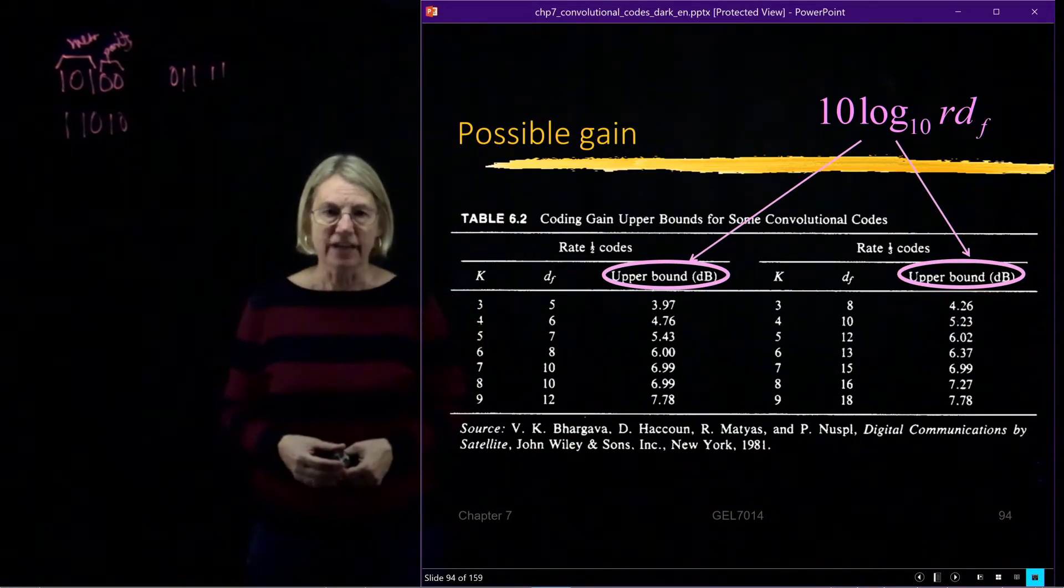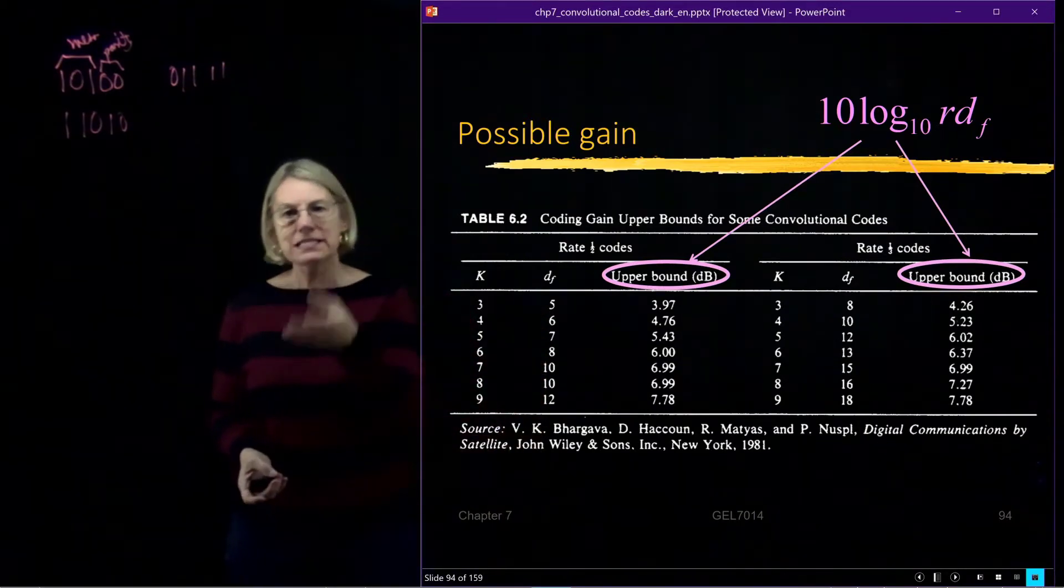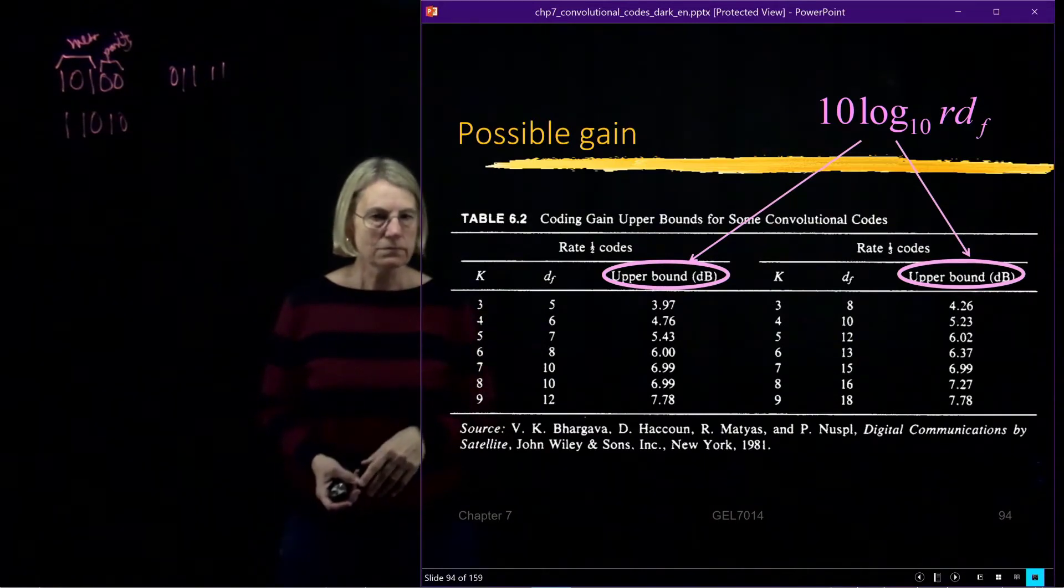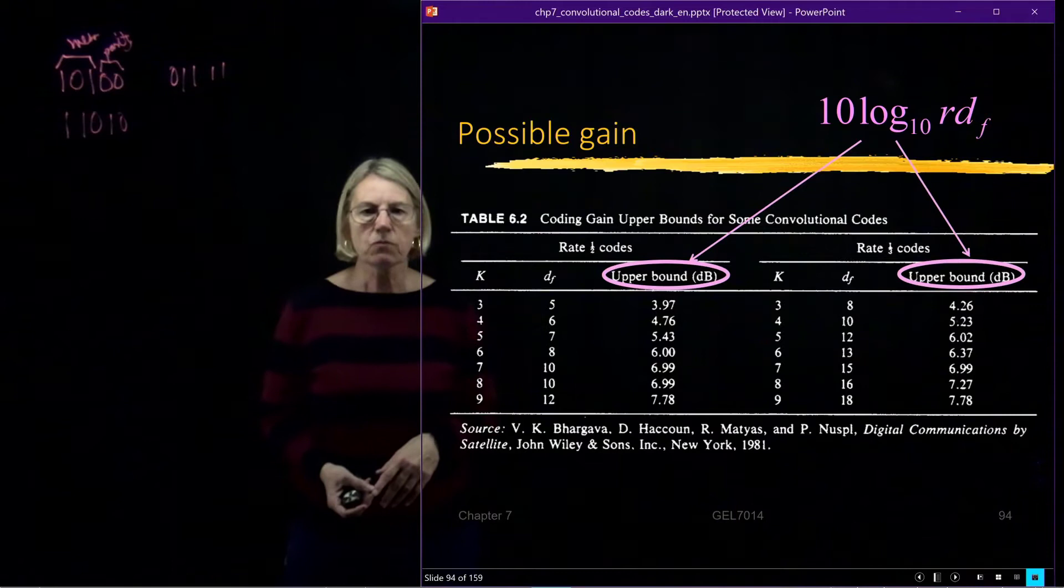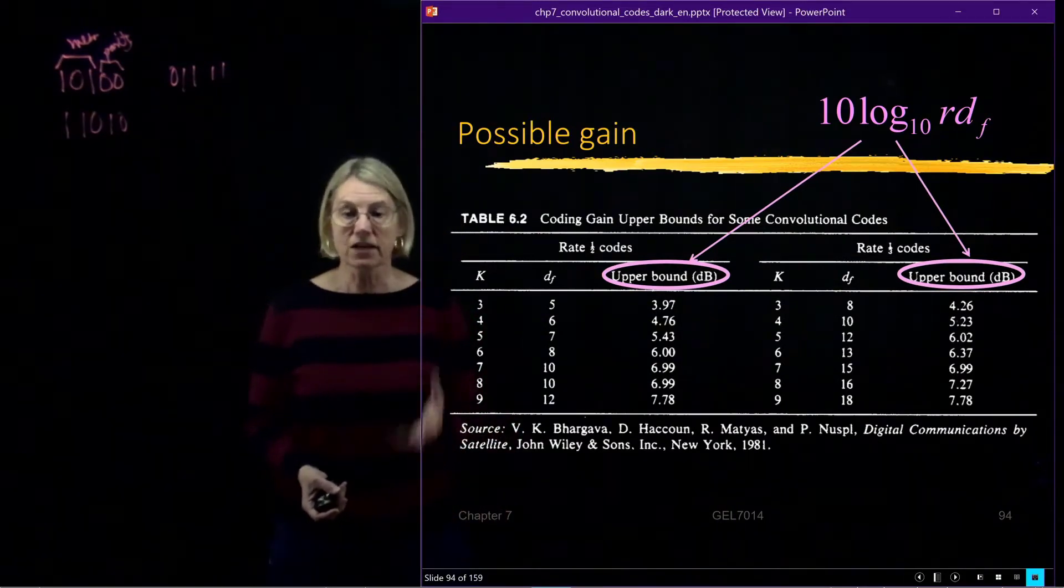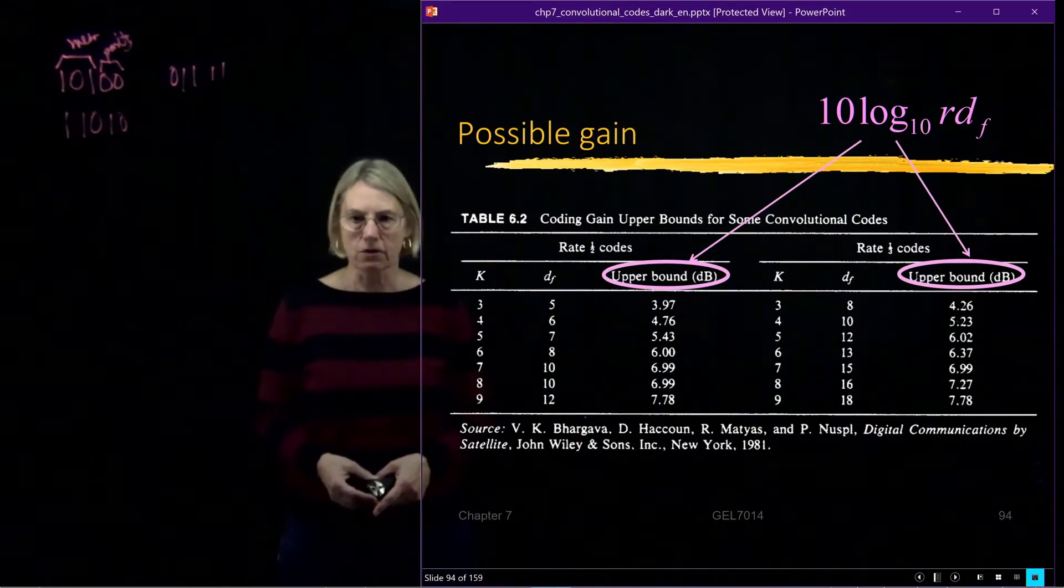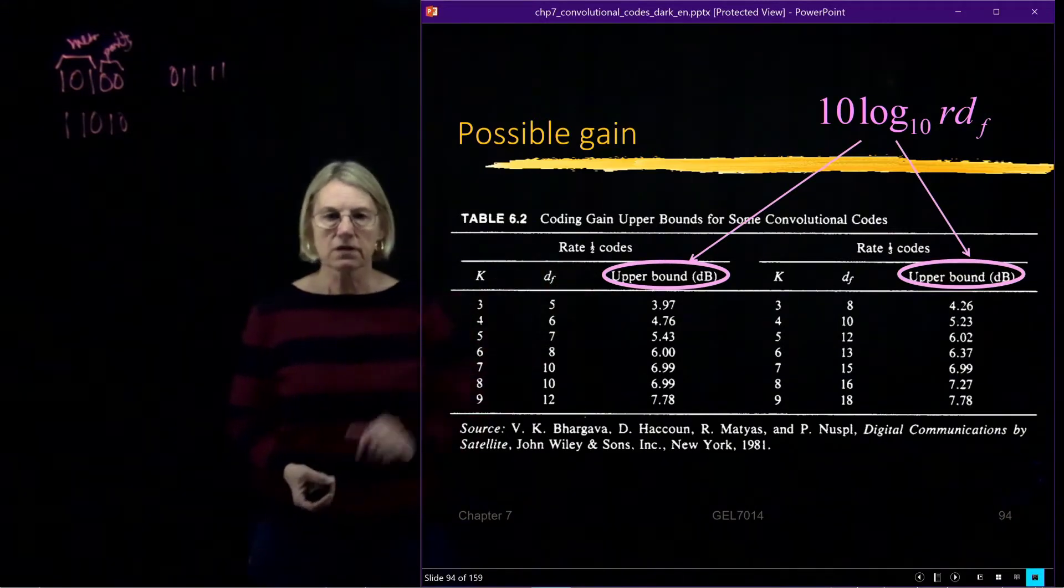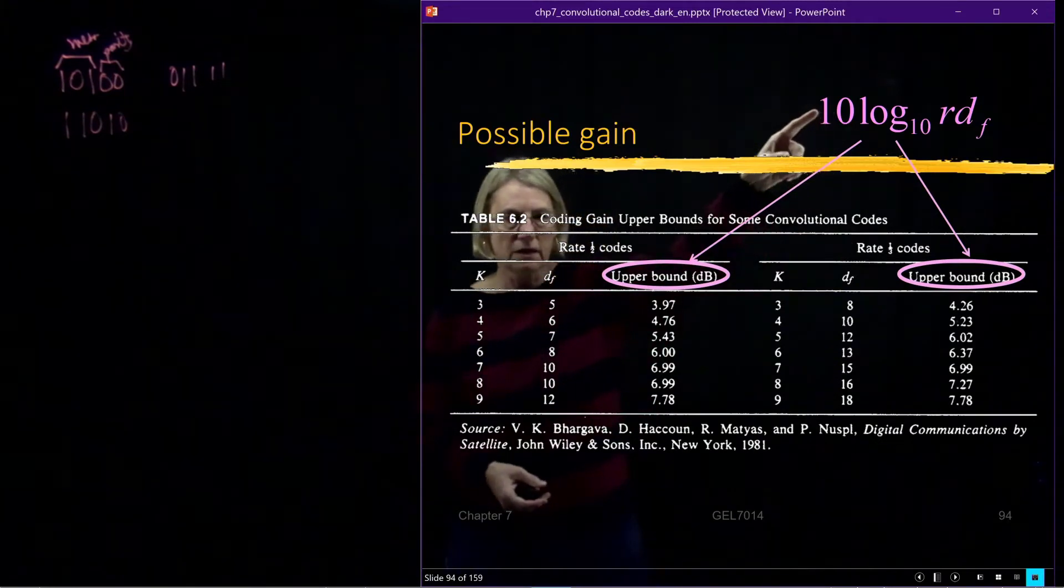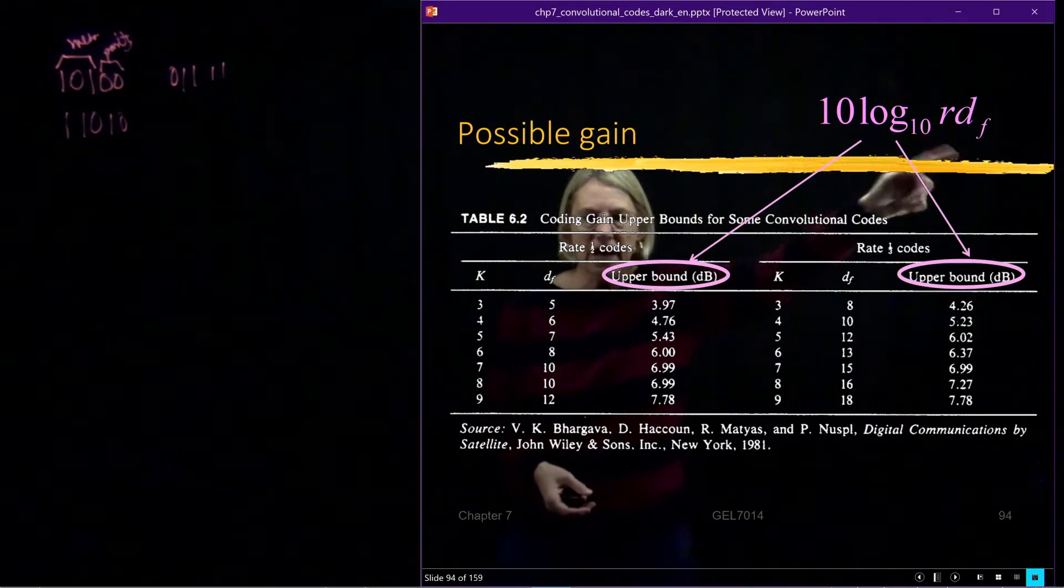Now, suppose that I have a given free distance. I know how many bits I could correct in a sequence, right? So that's what the T tells me. But a more useful metric for how strong my code is might be the gain, the coding gain. So what is the coding gain? And I can approximate the coding gain by, it's an upper bound approximation, and it's a very simple equation. So in dB, 10 log10, it would be the code rate multiplied by the free distance.